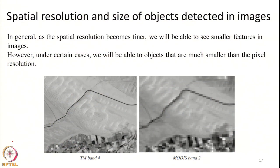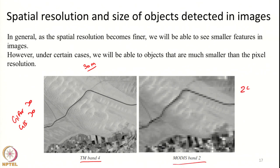An example is given in this slide. This is taken from a sensor called the Thematic Mapper on Landsat 5, where GIFOV and pixel size are 30 meters. So here GIFOV is 30 meters and GSI is also 30 meters. This is MODIS band 2 where each pixel corresponds to 250 meters of data — one pixel corresponds to 250 meters by 250 meters of ground space.